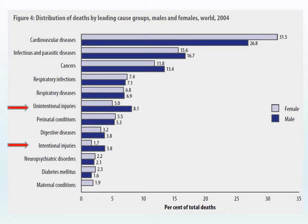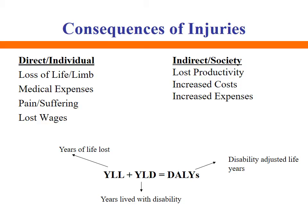When we divide the distribution of deaths from injuries by sex, we see that whether it is unintentional or intentional injuries, males are more likely to die than females. For unintentional injuries, 8.1% of males die compared to 5% of females. For intentional injuries, 3.8% of males die compared to 1.7% of females. So males die more from injuries than females across both categories.